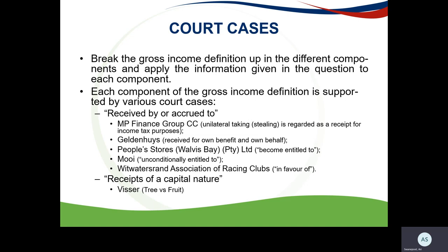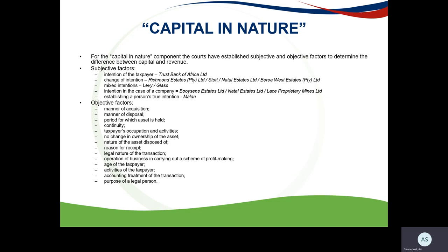Regarding receipts of a capital nature, the Fisser case laid down the tree versus fruit principle. For example, a taxpayer has a second house which he rents out — the house is the tree (the capital) and the rental income is the fruit. Capital in nature can be quite difficult to determine, so subjective and objective factors have been established to determine whether something is capital or revenue.